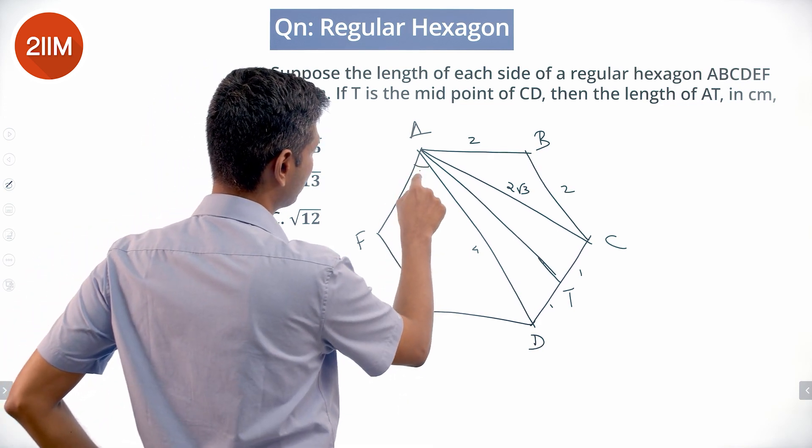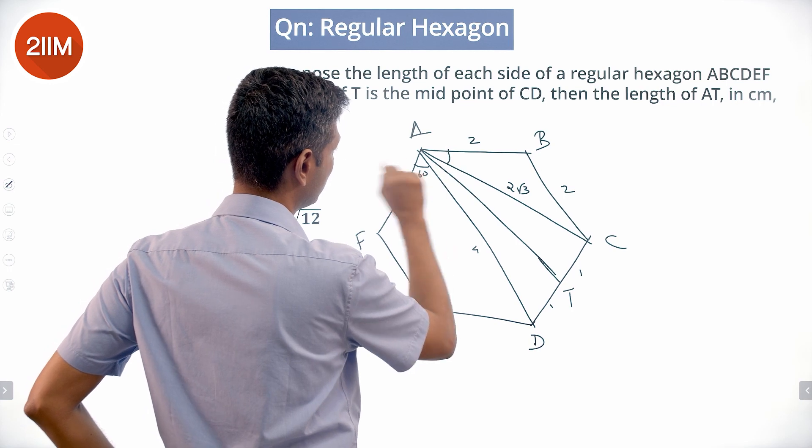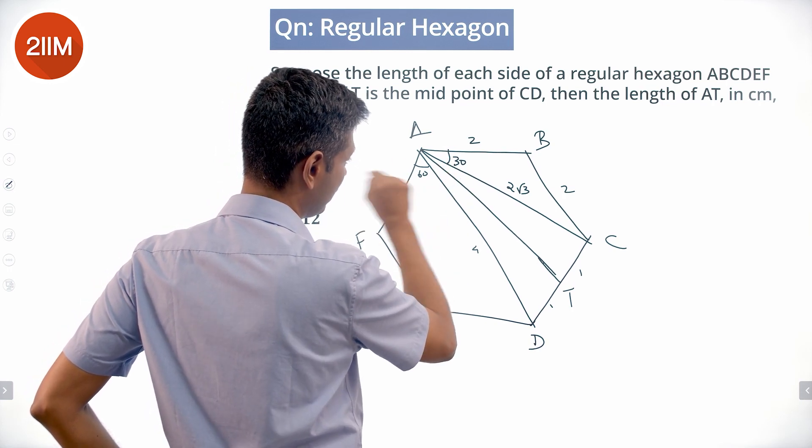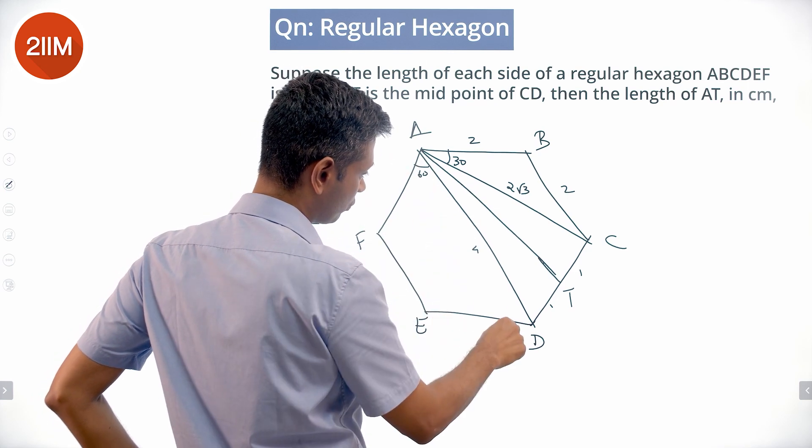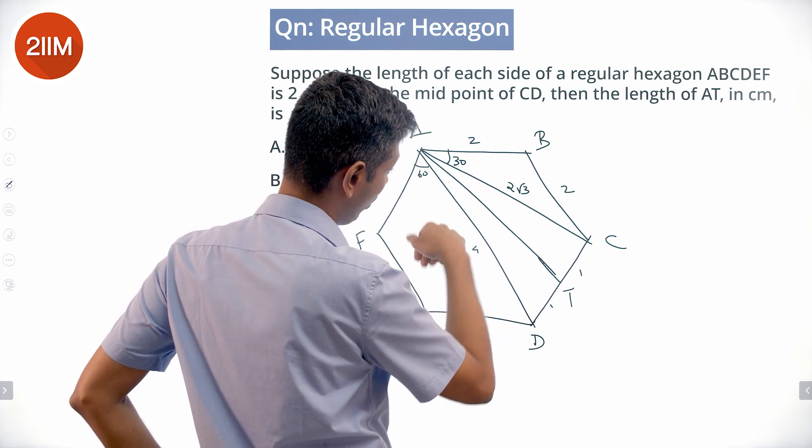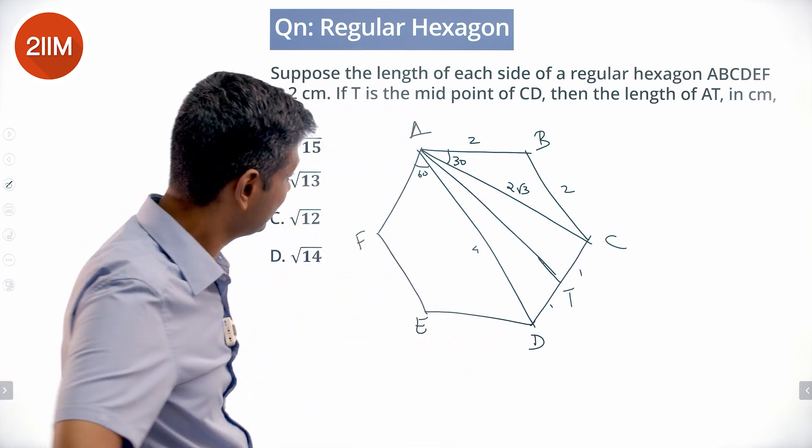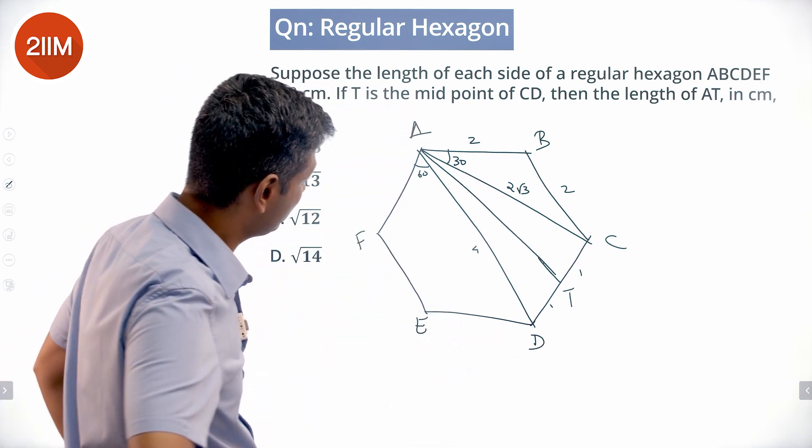This is 60, and so this is 30. So this angle is 30. We know all three sides, so we can find that angle, but we want to find AT, not anything else. Very interesting question.